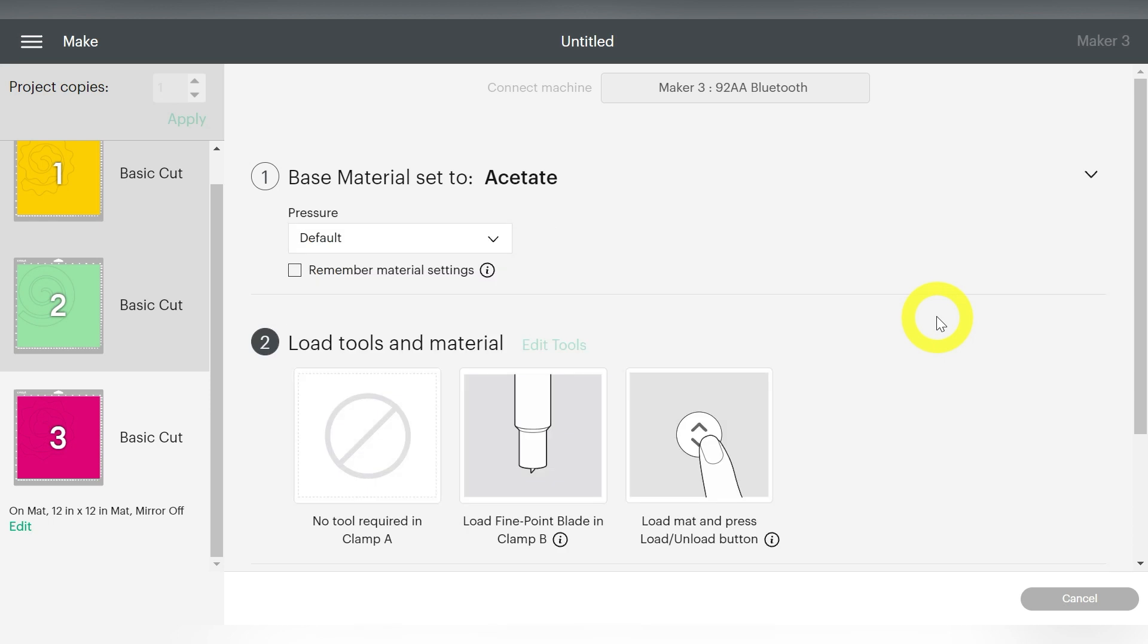Luckily for all of my Silhouette users, I can also tell you that if you choose the Cardstock Textured setting, in your Cut Settings, go to the material called Cardstock Textured. Use those settings, but set it to two passes.